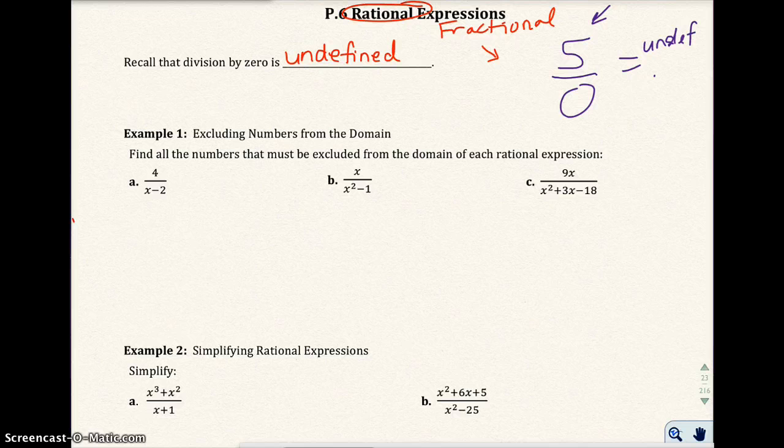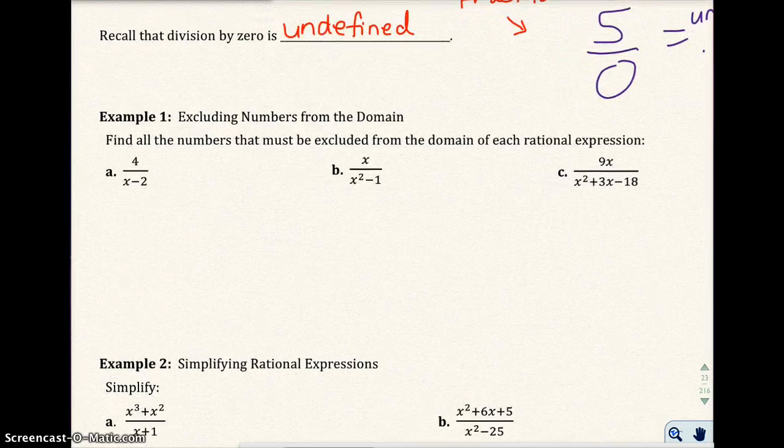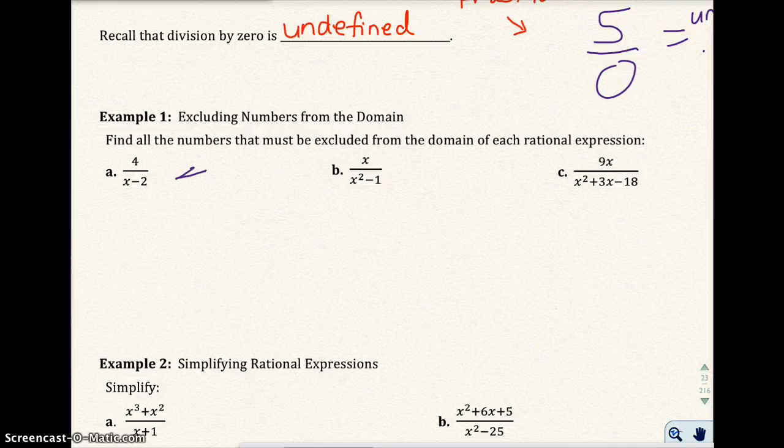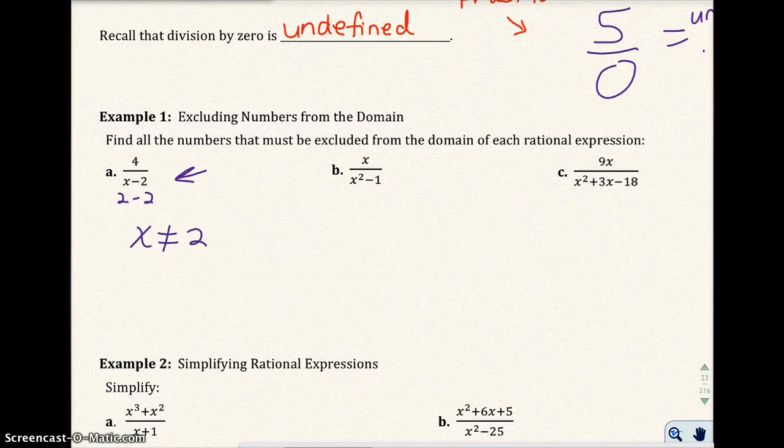So in example 1, we want to make sure that we can include numbers from the domain. We want to find all the numbers that must be included from the domain of each rational expression. If I look at part A, we want to make sure that the denominator does not equal 0 because our expression would be undefined. So we know that x cannot be 2 because 2 minus 2 would be 0. We don't want 0 in the denominator.